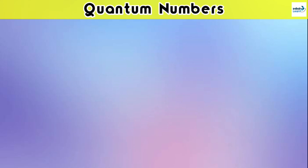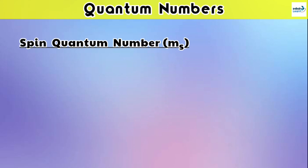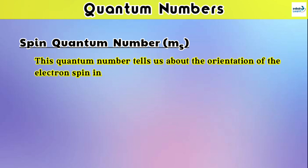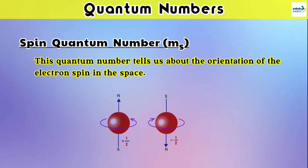Now let's move to the last quantum number, which is the spin quantum number. This quantum number describes the orientation of the electron spin in space — simply whether the electron is rotating clockwise or anticlockwise. If an electron is rotating clockwise, its spin quantum number will be +1/2, and if it is rotating anticlockwise, its spin quantum number will be −1/2.